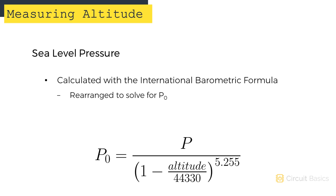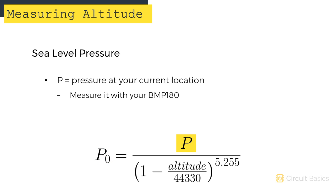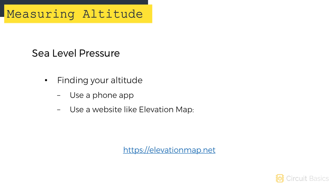Sea level pressure is calculated with the same international barometric formula we saw earlier. It's just been rearranged to solve for P0. P0 is the sea level pressure at your current location. P is still the pressure measured by the BMP180, and altitude is the altitude at your current location. I'd recommend using a phone app to find your current altitude. They're easy to use and pretty accurate too. Otherwise, sites like elevationmap.net will detect your location and give you an altitude measurement.